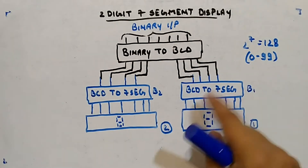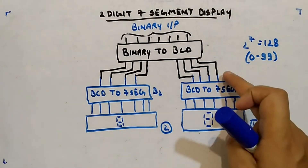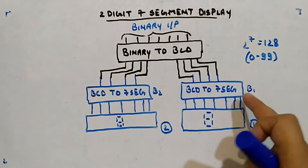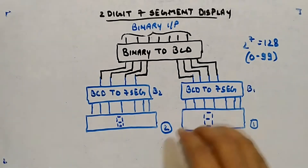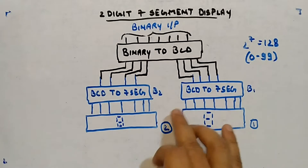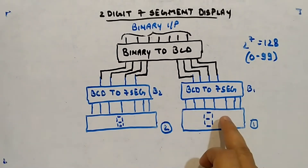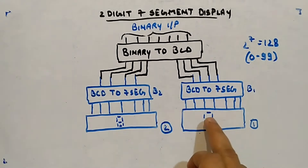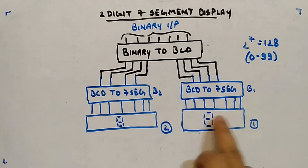We have seen single seven segment display and how it works. A BCD input was given and we designed the circuit — BCD to seven segment output — with outputs A, B, C, D, E, F, G. Based on the values of A through G, this display is glowing. I'm calling it the first display.